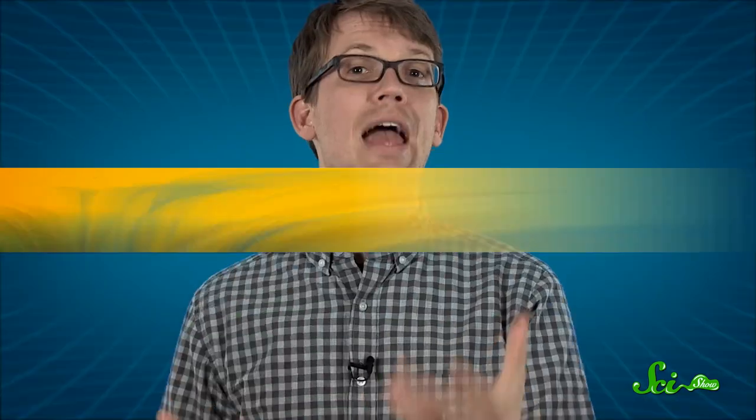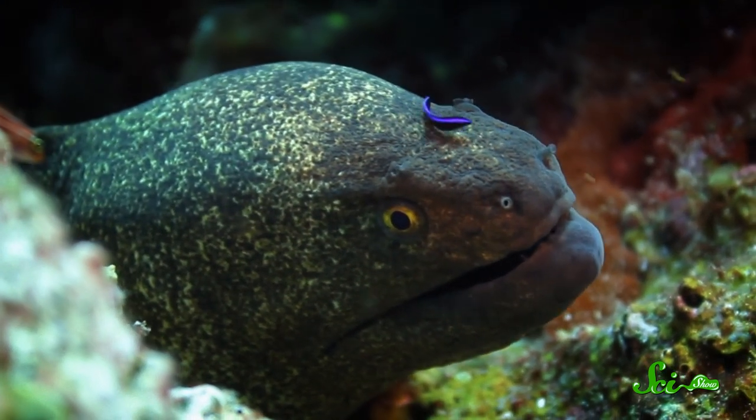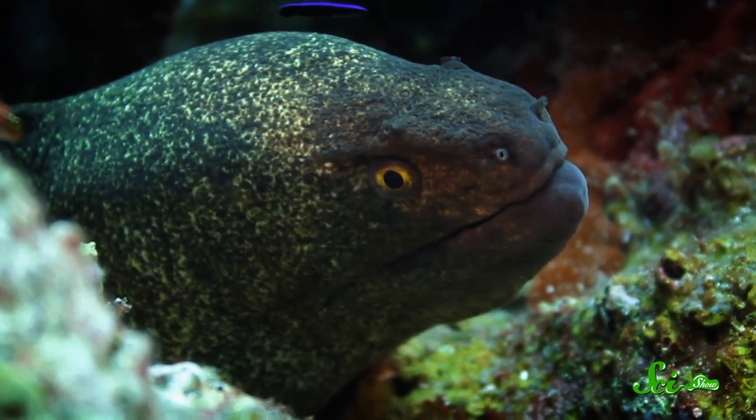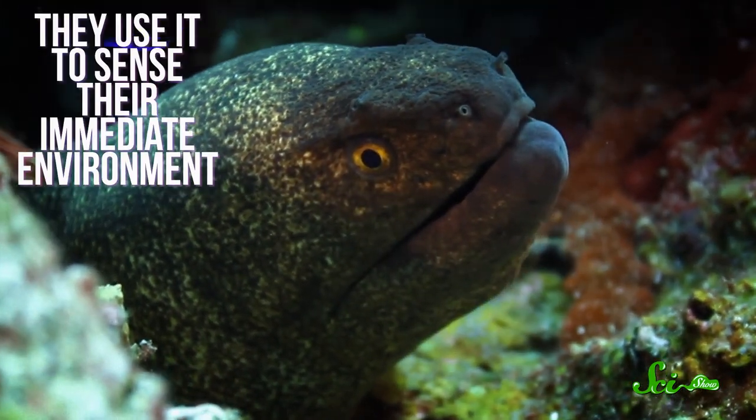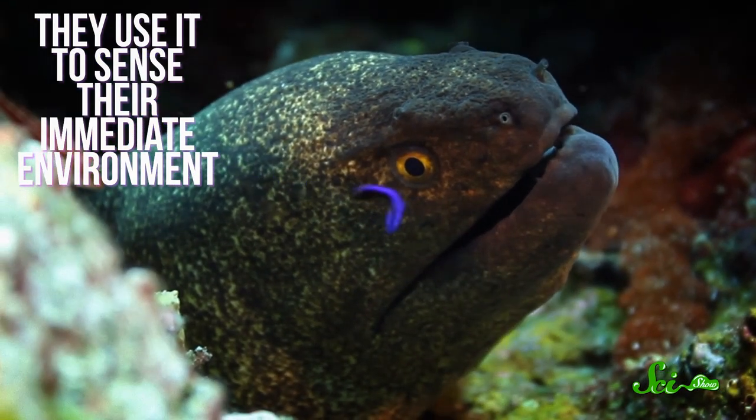But this arrangement of electrocytes doesn't have to be used offensively. And in most electric fish, it isn't. Instead, they create a constant electric field around themselves, usually with the power of only a few millivolts. They use this to sense their immediate environment, so they know when food or predators are nearby, even in total darkness.